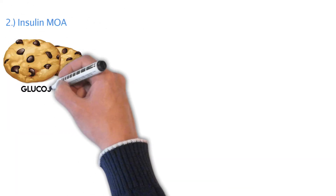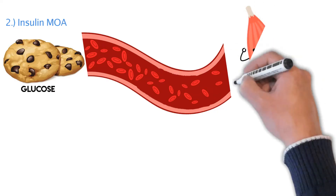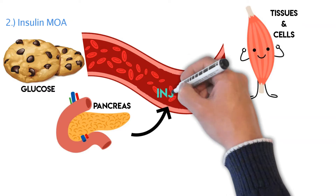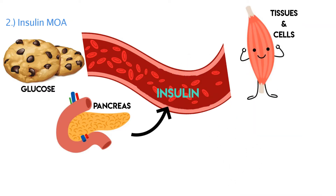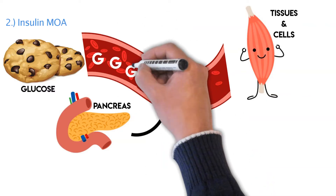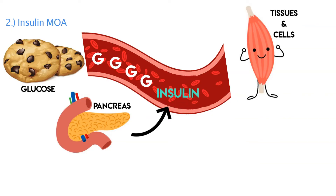Now let's dig into how insulin actually works. Insulin is a hormone released from the pancreas into your bloodstream. When you have glucose in your blood — from eating or from your liver releasing glucose — your pancreas notices and starts to push out insulin. The goal of insulin is to couple with the glucose to allow it to enter our tissues and cells, giving them the energy they need.